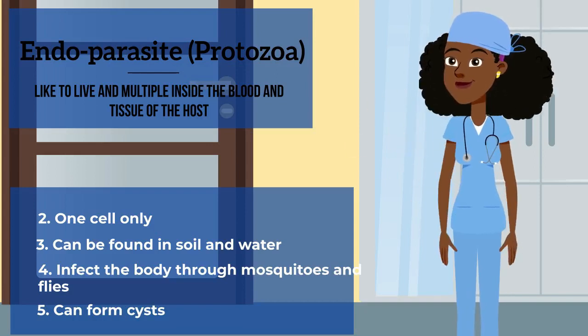Number one is if it lives inside of its host. Number two is if it's made up of one cell only and nothing else. Number three is if you can find it in soil and water.